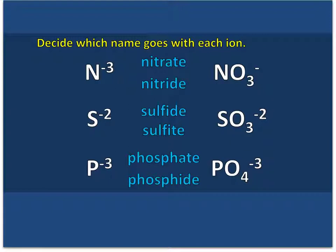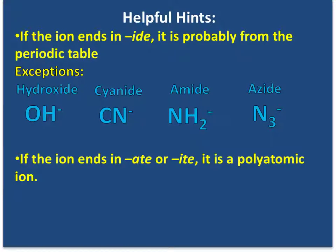Decide which name goes with each ion. Nitride goes here. Nitrate here. Sulfite here. Sulfide here. Phosphate here. Notice: anything that ends with -ATE or -ITE is polyatomic. If it ends with -IDE, then it's just the ion name for a non-metal element. That's a helpful hint. If it ends with -IDE, it's probably from the periodic table. There are a few exceptions: hydroxide, cyanide, amide, and azide. And usually if it ends in -ATE or -ITE, it's going to be a polyatomic ion.